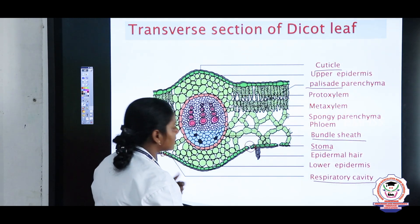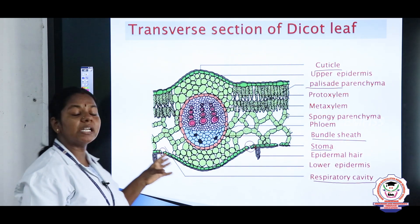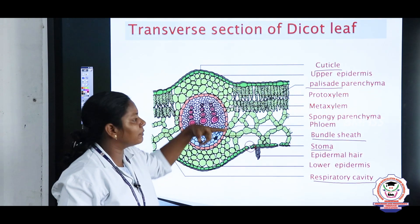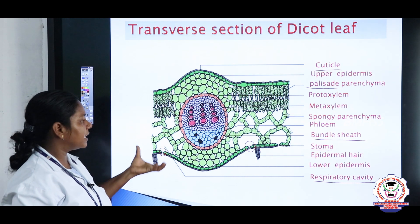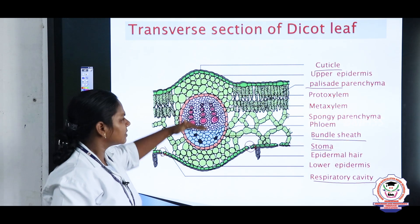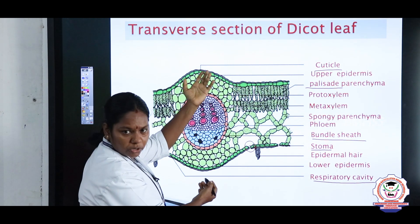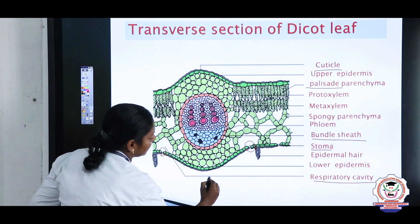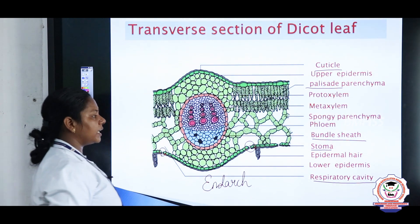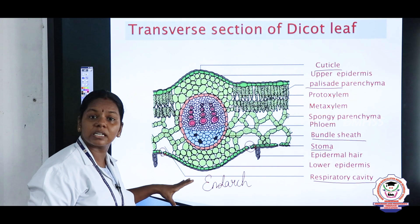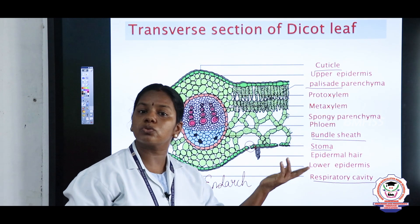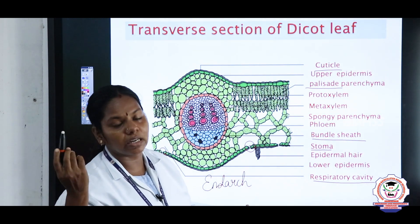In the dicot leaf, the mesophyll is differentiated into palisade parenchyma and spongy parenchyma. The proto xylem is towards the periphery and meta xylem is towards the center, so the xylem is said to be endarch. This is about the internal structure of the dicot leaf. The main difference is that the mesophyll is differentiated into spongy and palisade parenchyma in dicot, but not differentiated in monocot.